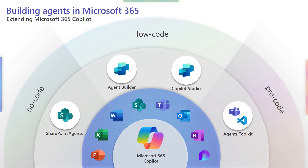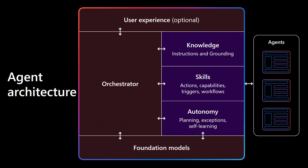You can build agents in Microsoft 365 using no-code, low-code, or pro-code approaches. Tools like SharePoint Agents, Agent Builder, Copilot Studio, and the Agents Toolkit offer flexible ways to extend Copilot. Agents are built from foundational models and orchestrators, and can include user experiences. Each agent uses knowledge, skills, autonomy, and planning capabilities. Microsoft 365 Copilot itself is an agent, and it can work with other agents to expand its skills and knowledge.